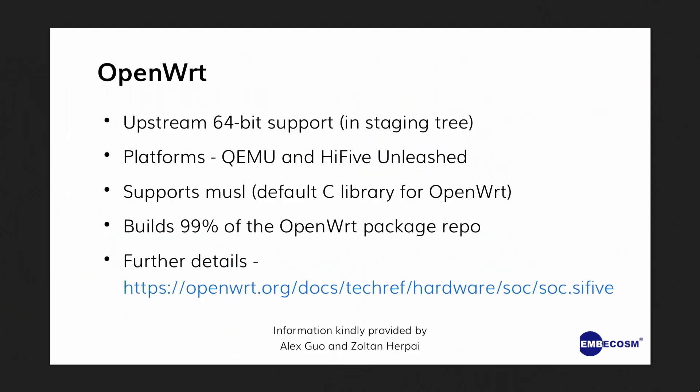OpenWRT — upstream 64-bit support is currently in the staging tree with QEMU and HiFive Unleashed support. They have a version that builds and supports Musl, which is their default C library. 99% of the package repo is currently building for RISC-V.